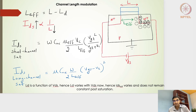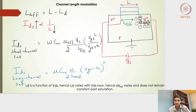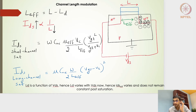This covers channel length modulation, the third non-ideal effect. The short channel current expression accounts for mobility degradation and velocity saturation. Now we are discussing channel length modulation, which was the third non-ideal effect introduced in the last lecture.